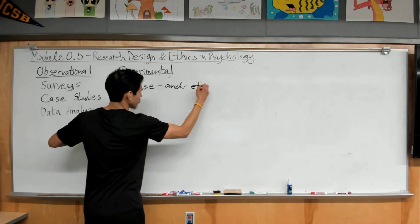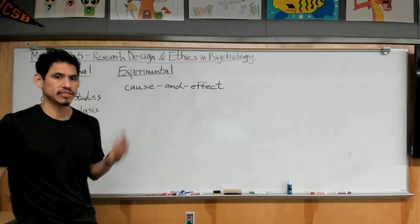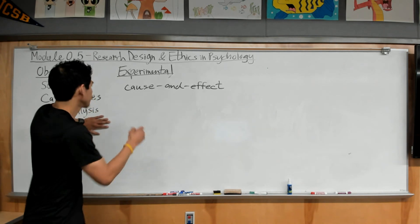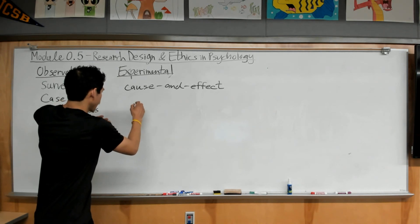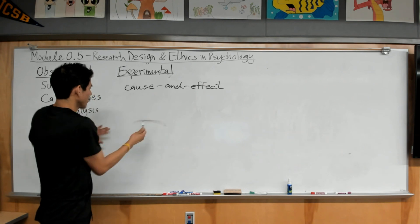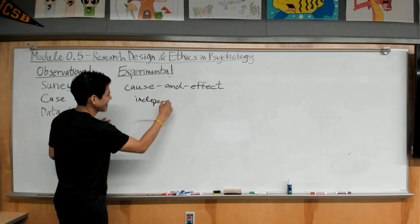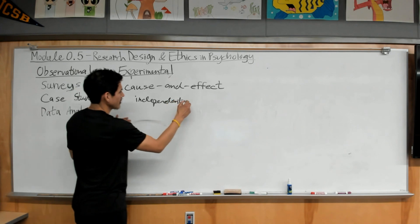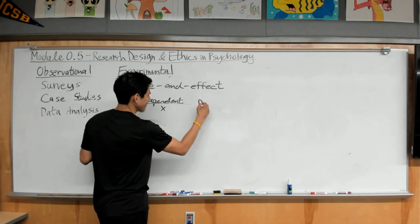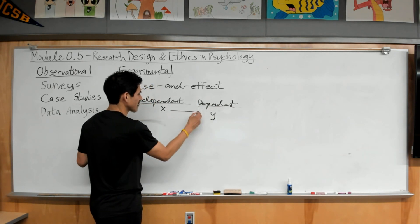You've probably done some experiments in science class. You have two variables — you can call it the independent or explanatory variable, which is X, and then the dependent variable, which is Y. You're trying to see if X caused Y to change.